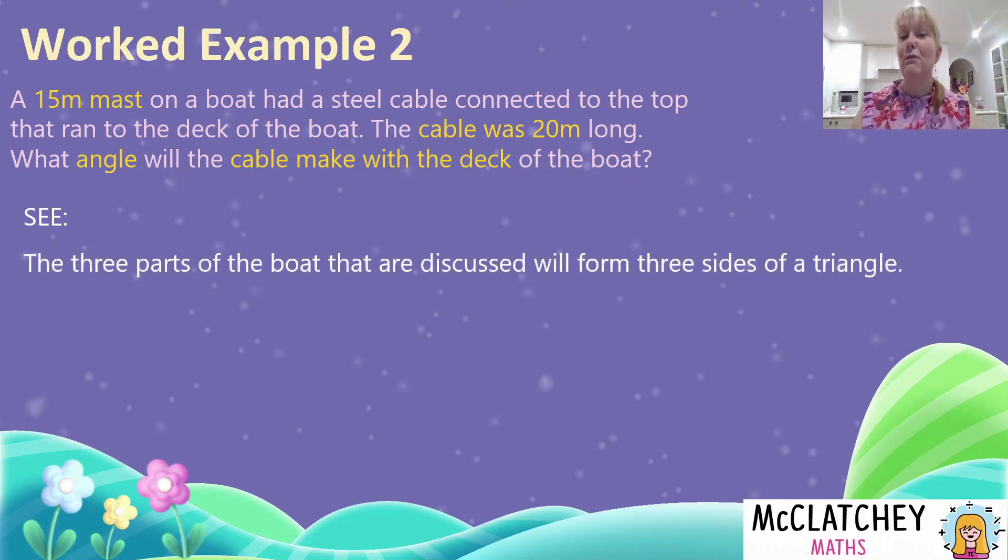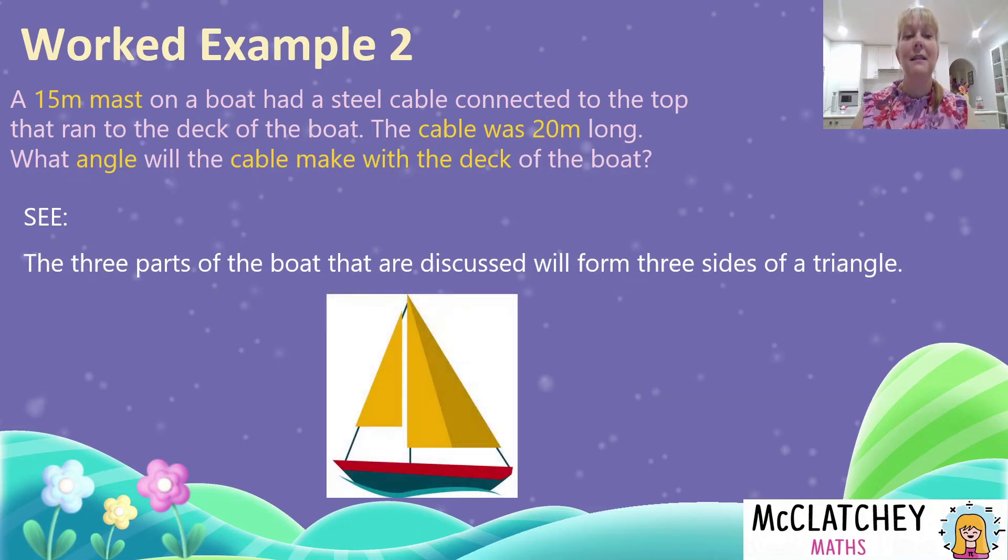So firstly, those three parts of the boat - the mast, the deck, and the cable - are all going to form three parts of a right angle triangle. We've got this cable that runs down from the top of the boat to the bottom of the boat. We've got this mast,